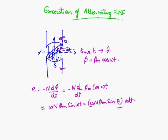When theta is ninety degrees, E becomes ωNΦ_M, which is E_m, where E_m is the maximum value of the instantaneous voltage.